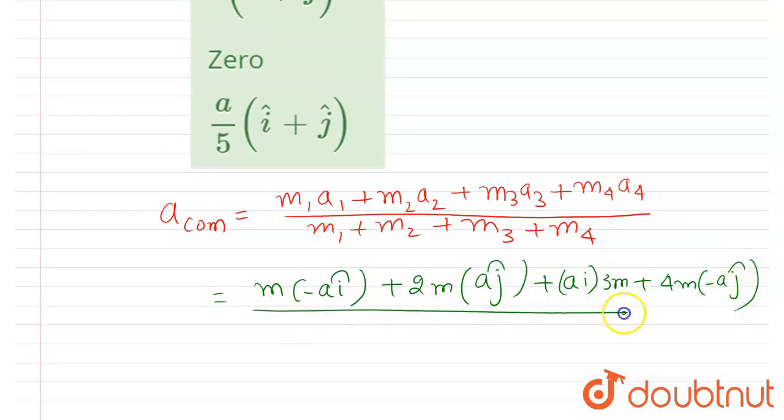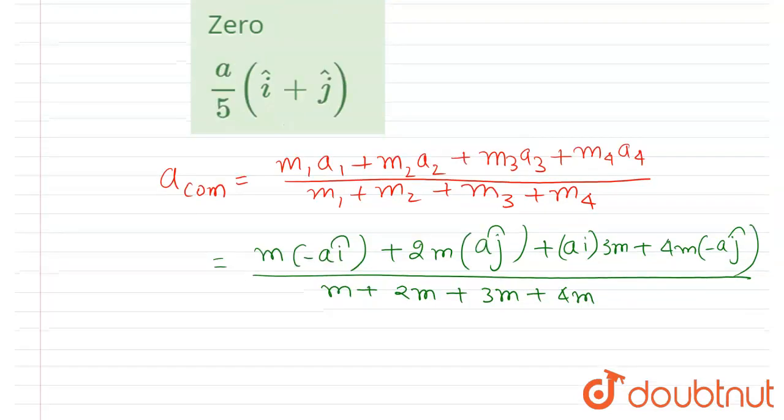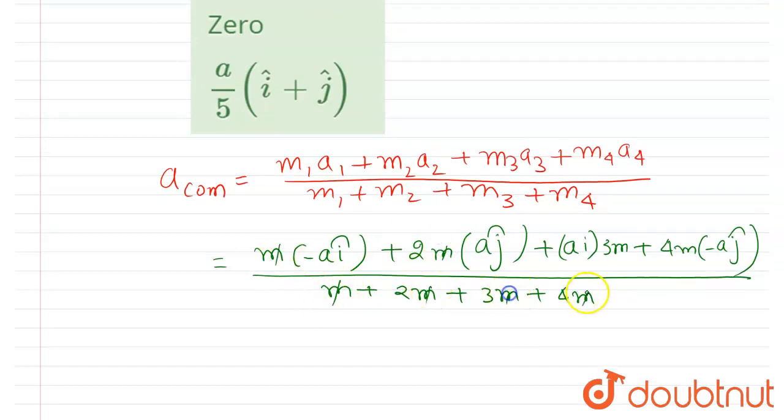In division I will write m plus 2m plus 3m plus 4m. So you can see this m will get cancelled out. Now if you see here, this is -î and this is 3î, so 3a î minus a î will be 2a î.